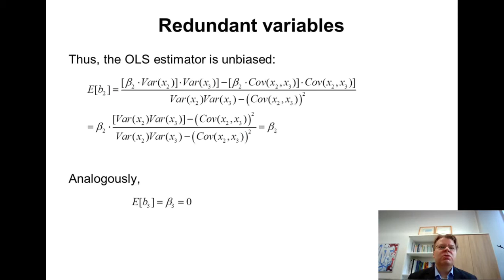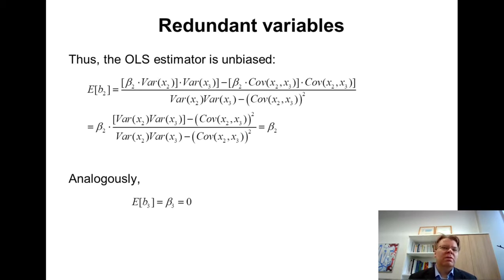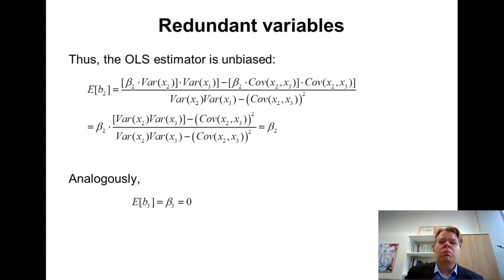Inserting that result into the equation and taking the expectation, it is easy to verify that the expected value of b2 is actually beta2. So even though we included this unnecessary redundant x3 variable, the expected value of b2 is still beta2 — there is no bias for x2. Similarly, the expected value of b3 equals beta3, which is zero. So there is no bias when including an additional explanatory variable.